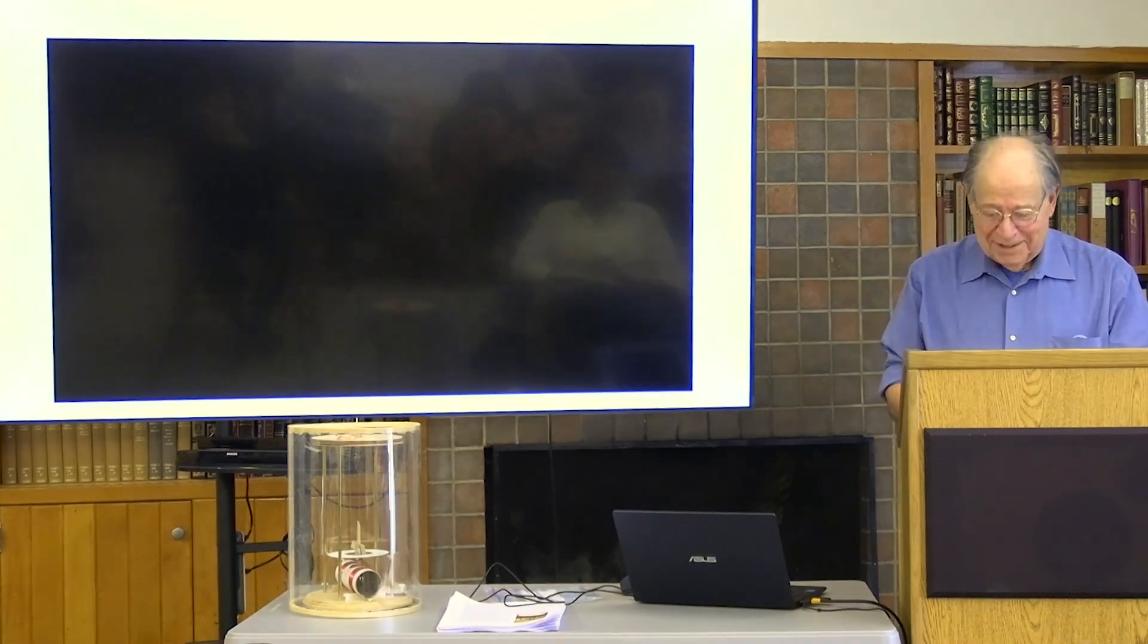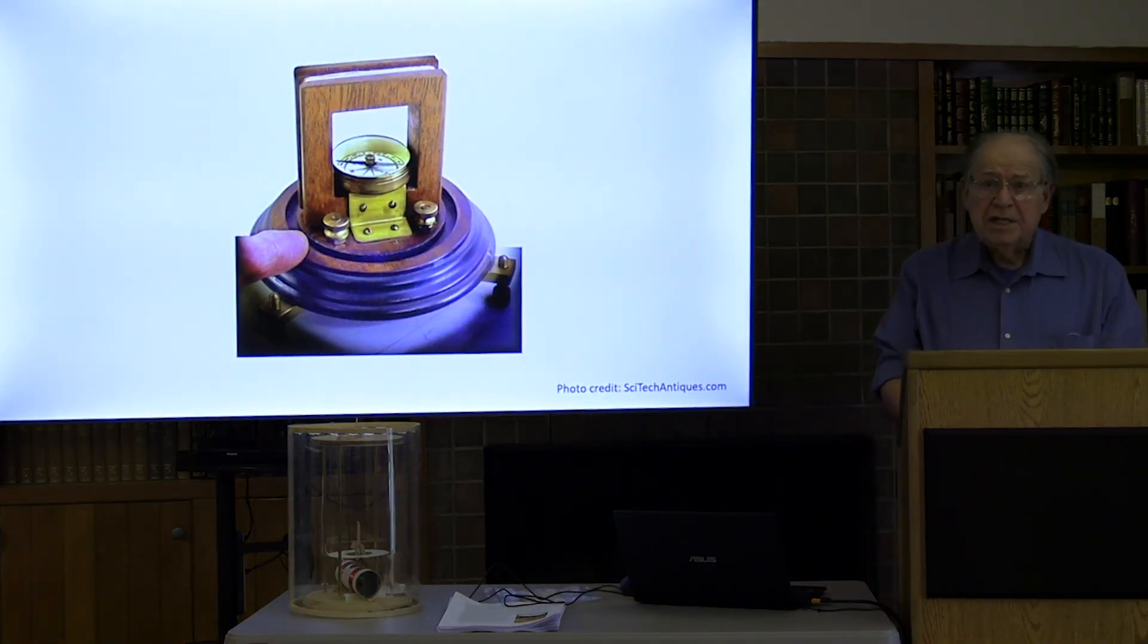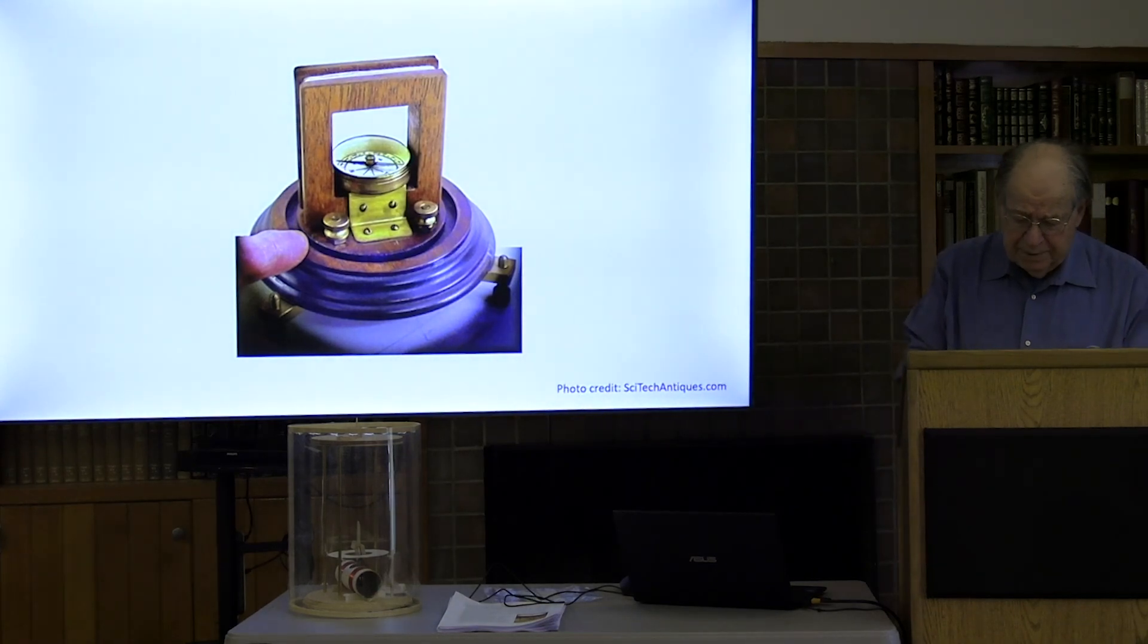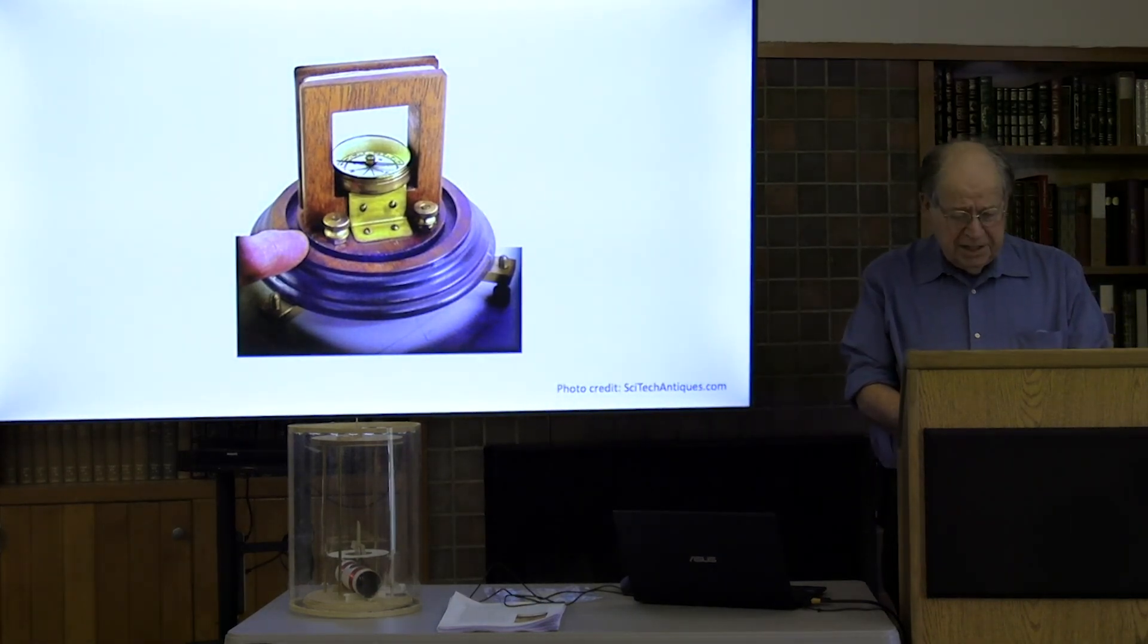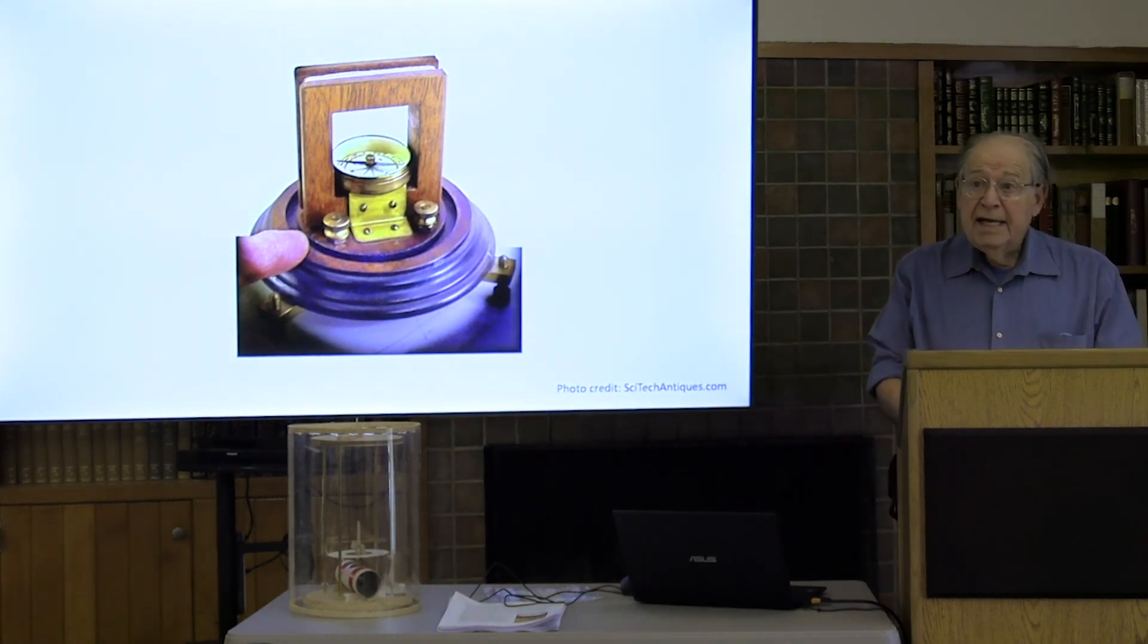Now, how does all this apply to the galvanometer? One early form of galvanometer was essentially a magnetic compass, a magnetized needle pivoting in the Earth's magnetic field. It is decidedly analogous to a pendulum, which is a weight suspended in a gravitational field.